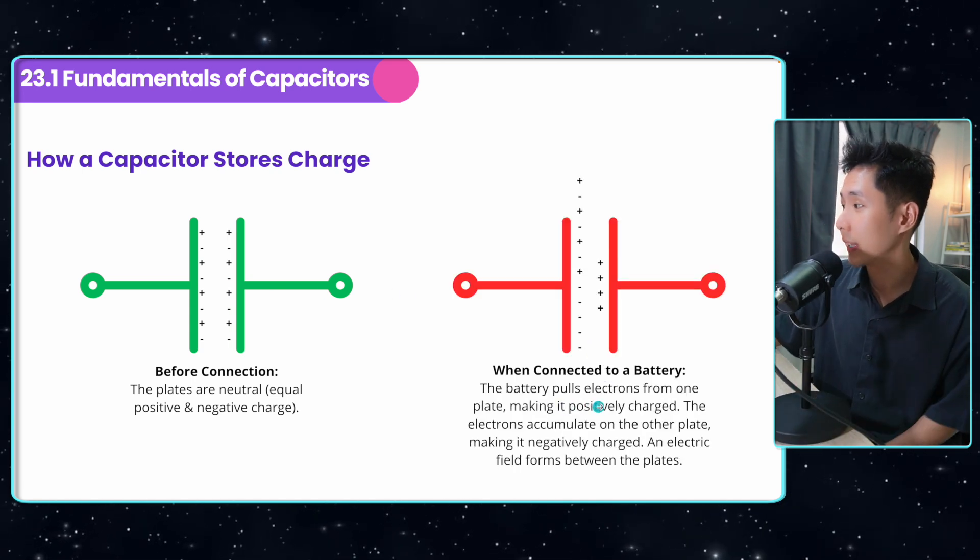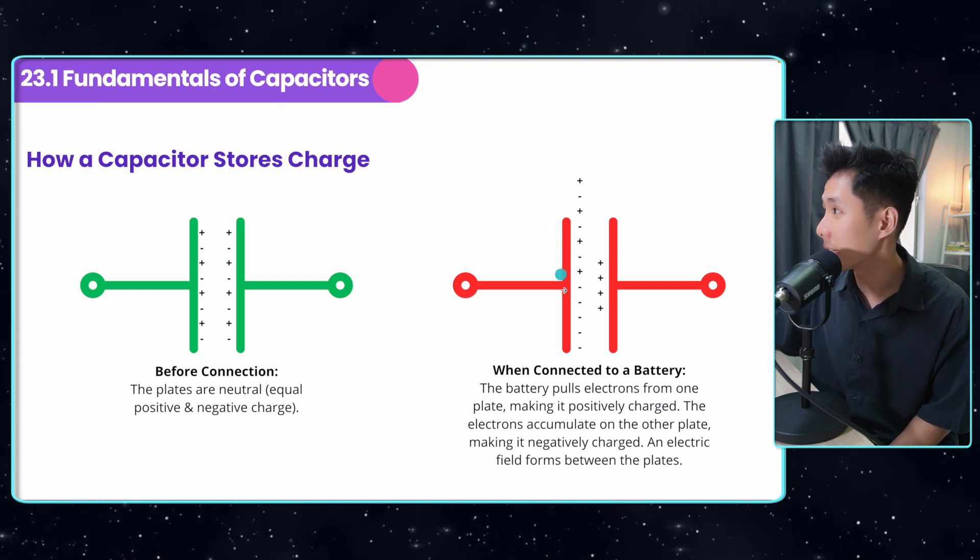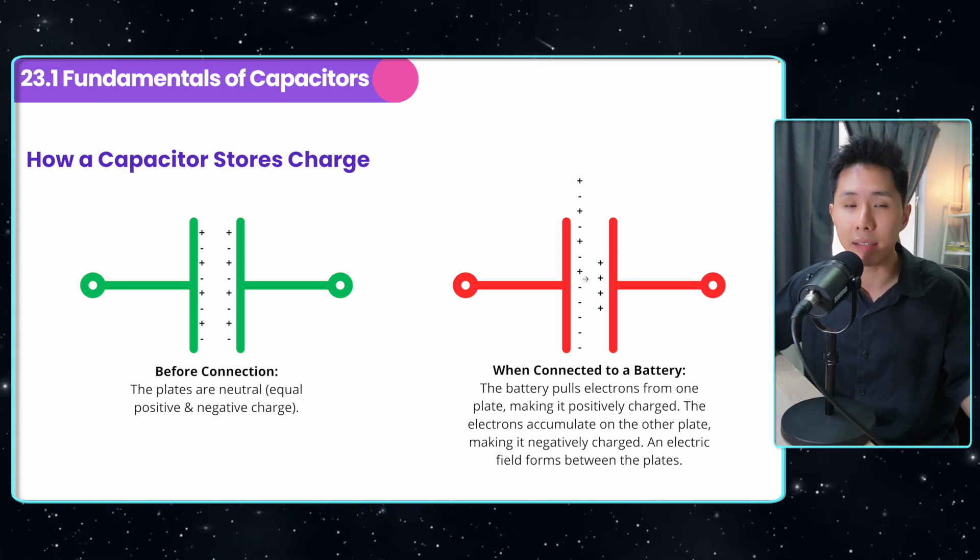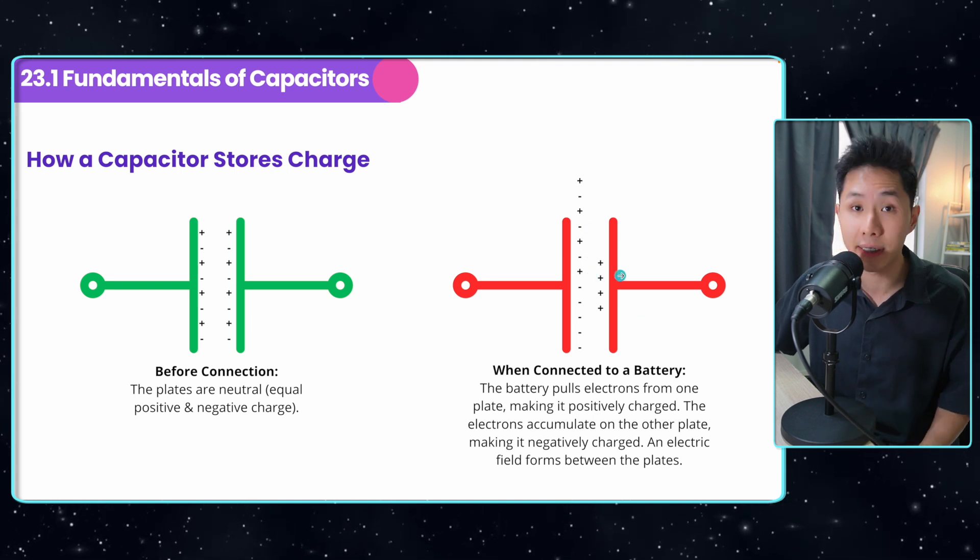the battery will pull electrons from one plate, making it more positively charged. And the electrons accumulate on the other, making it negatively charged. Because of that, an electric field will be formed between the plates here in the center.